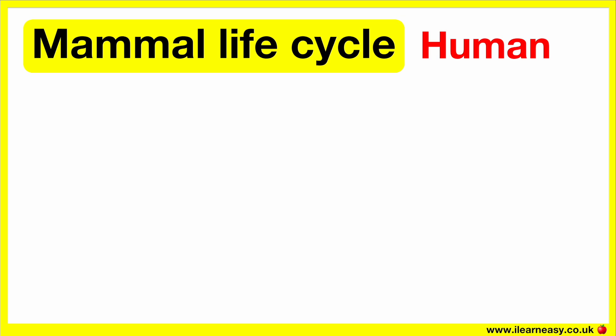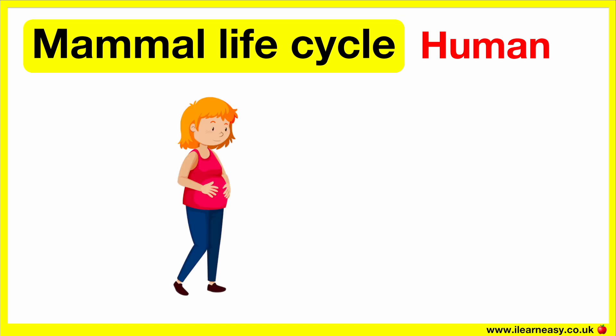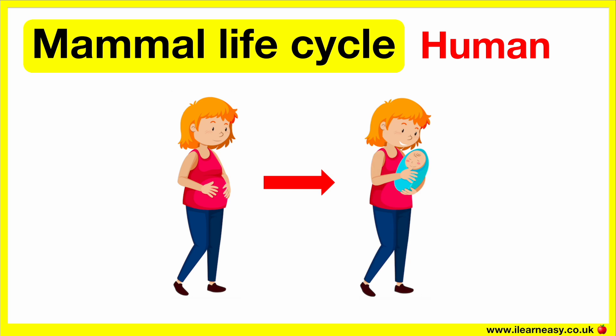Humans are mammals. After fertilization, the baby fully forms inside of the mother's body. The mother then gives birth to their live young. The baby is fully formed and ready for the outside world when it's born.